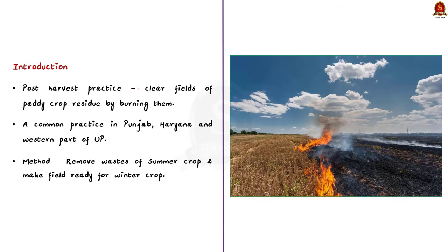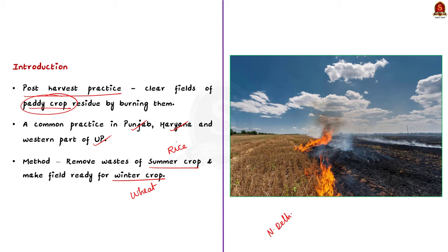The intro can be a simple one, just explaining the phenomenon. Stubble burning is a post-harvest practice primarily used to clear the fields of paddy crop residue by burning them. This is commonly practiced in Punjab, Haryana, and the western part of Uttar Pradesh. This method is used to remove the waste of summer crop, that is rice, and make the field ready for winter crop, that is wheat. Recently, there is increasing air pollution in New Delhi and surrounding areas, and stubble burning is one of the important contributors to this pollution. In this way, you can link the intro with the body of the answer.